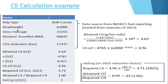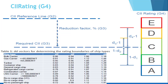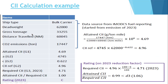Let's take an example. Suppose you have a bulk carrier having a dead weight tonnage of 62,000, a given gross tonnage, a distance travelled, and a given CO2 emission. The attained CII is CO2 emission divided by dead weight multiplied by distance travelled. More precisely, it is annual fuel consumption multiplied by CO2 conversion factor, divided by annual distance travel multiplied by dead weight or gross tonnage. Calculating this: annual CO2 emission divided by dead weight multiplied by distance travel multiplied by 10 to the power 6 gives us 4.69. So attained CII (G1) is 4.69.